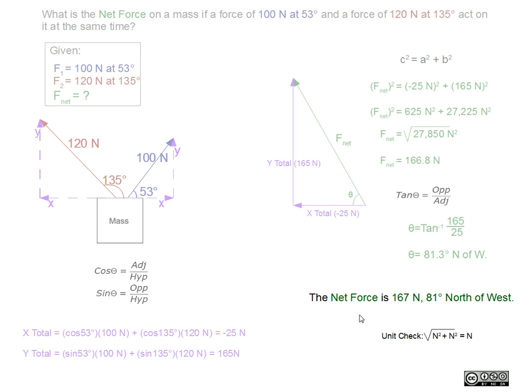Lastly, we round our final answer to the correct amount of sig figs and conclude that the net force is 167 newtons, 81 degrees north of west.